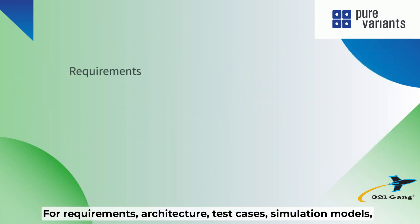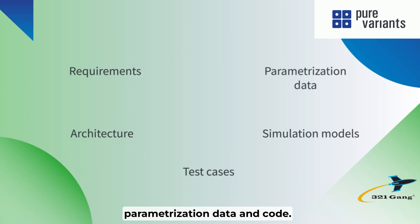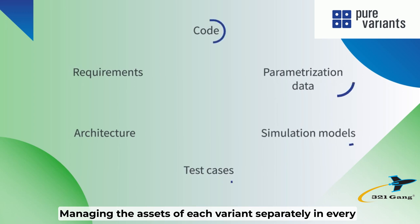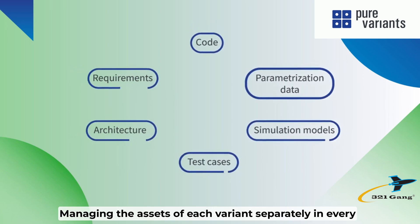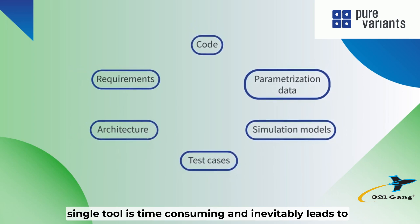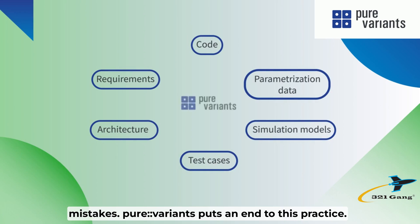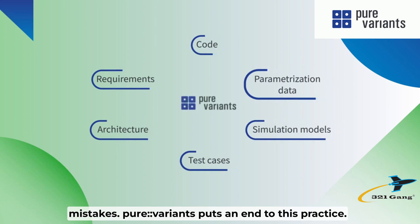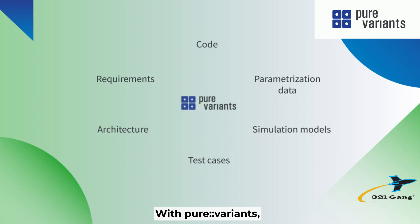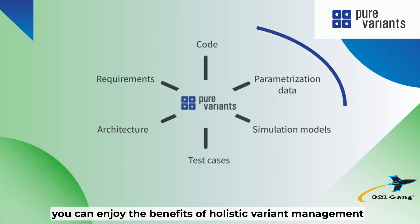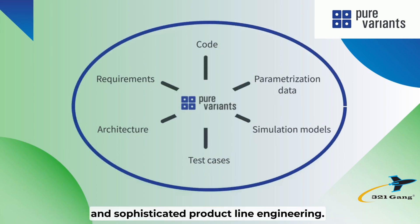For requirements, architecture, test cases, simulation models, parametrization data, and code, a wide range of different tools are needed. Managing the assets of each variant separately in every single tool is time consuming and inevitably leads to mistakes. Pure Variance puts an end to this practice. With Pure Variance, you can enjoy the benefits of holistic variant management and sophisticated product line engineering.